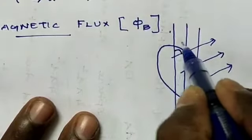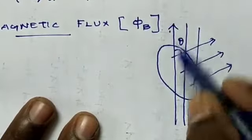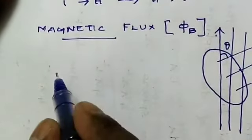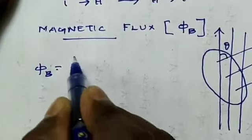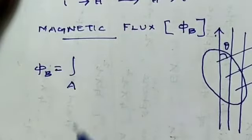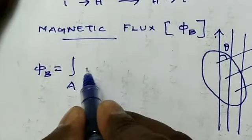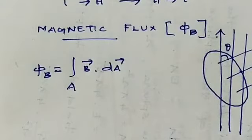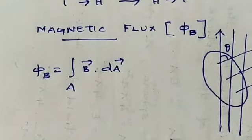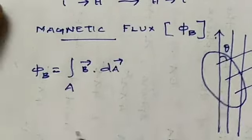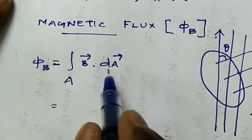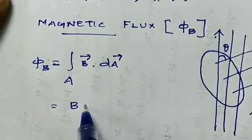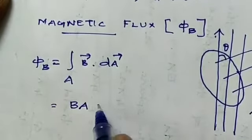The angle considered here is between the direction of the magnetic field and the normal to the surface. Writing down the equation: magnetic flux Phi_B is equal to the integral of B vector dot dA vector over the area. Here, B vector is the magnetic field and we consider a particular area A. Using the dot product, we write this as: Phi_B = B A cos θ.